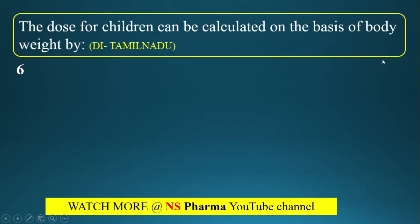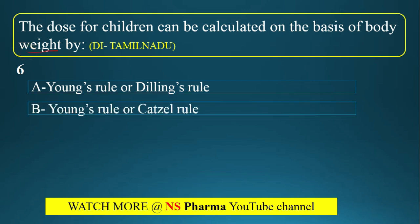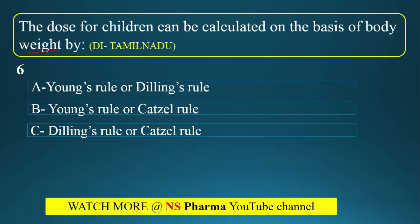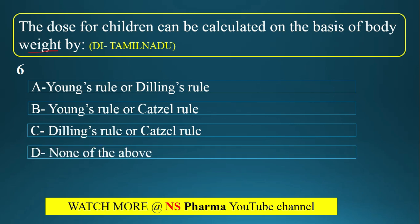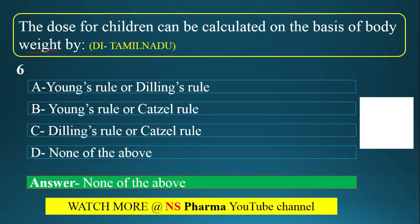Question number 6: The dose for children calculated on the basis of body weight uses which rule? Options are Young's rule or Dilling's rule, Young's rule or Catzel's rule, Dilling's rule or Catzel's rule, or none of the above. The correct answer is Option D — none of the above, as all three options given are incorrect.